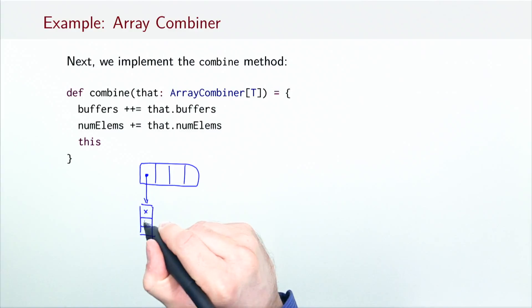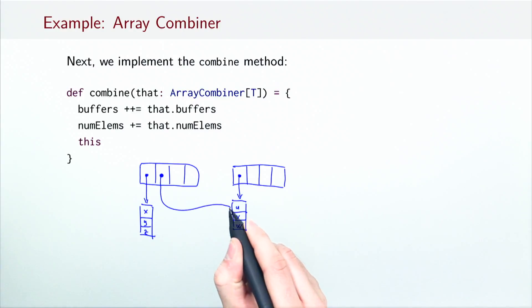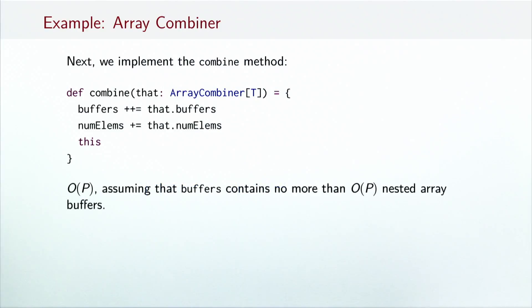Next, we implement the combine method. Here the reason for using nested array buffers becomes obvious. The combine method simply copies the references of the argument combiners buffers to its own buffers field. It does not need to copy the actual contents of those nested buffers, only a pointer to them. What is the running time of this combine? The number of computational steps is equal to the number of nested array buffers in the argument combiner. Since every array combiner is first created with only one nested array buffer and there are exactly p array combiners created in the reduction tree, one for each processor, the buffers field will never have more than p entries. For this reason, the running time of this combine method is O(p). Typical desktop computers today have around 4 processors and the most powerful workstations have several dozen. So p is usually negligible compared to the number of elements in the data structure and this is still an acceptable running time for the combine operation.